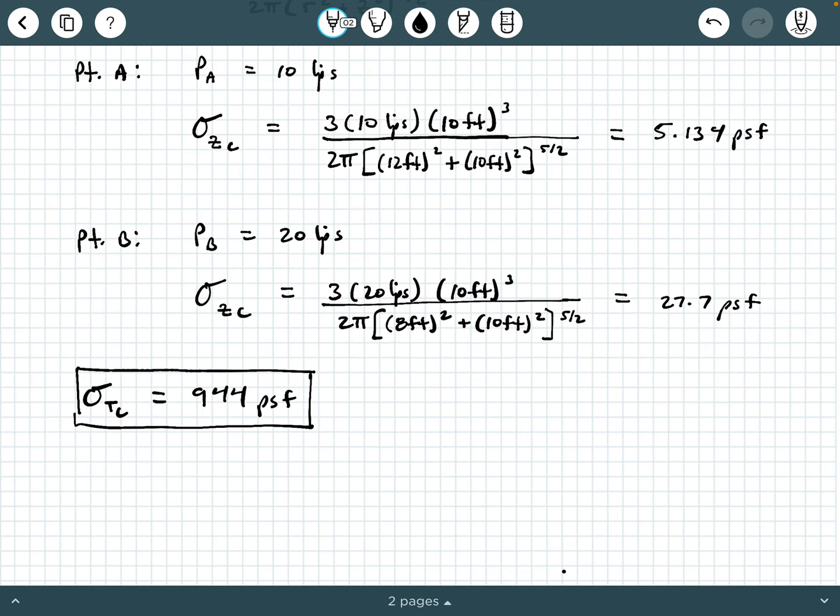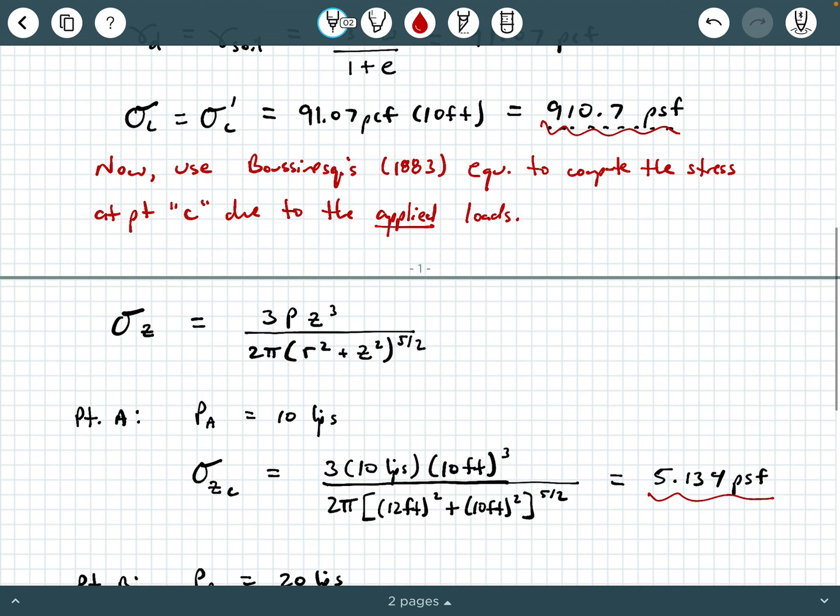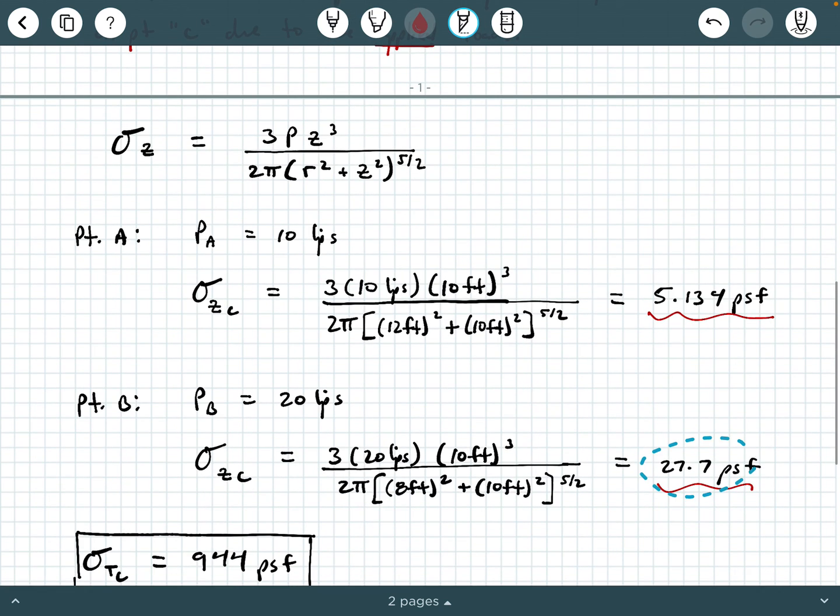Now, one thing we want to make a note of, please note that the largest component of these three stresses is actually due to the soil above the point of interest. So all the soil that's on top of point C, that's what's actually causing the greatest amount of stress at point C. These loads at point A and point B are actually causing significantly lower loads at point C compared to the soil sitting on top of it. And that goes back to the whole idea of stress dissipation. As we investigate points that are farther and farther away from where loads are applied, the magnitude of the stress due to the applied loads at the ground surface actually decreases as we move away from the point of load application. So again, that goes back to the whole concept of stress dissipation.